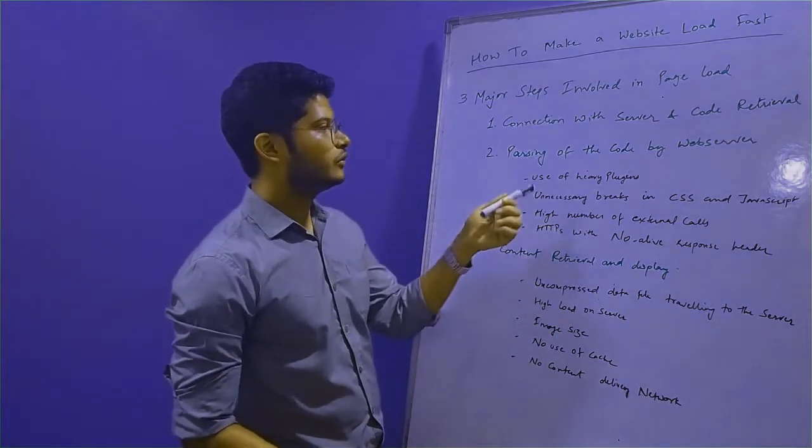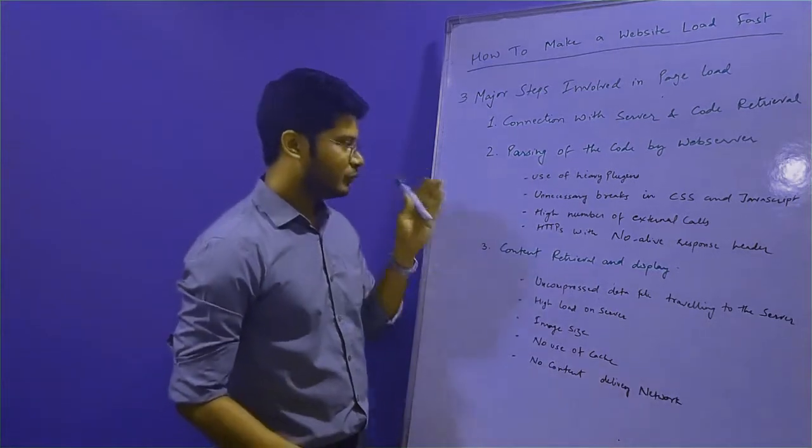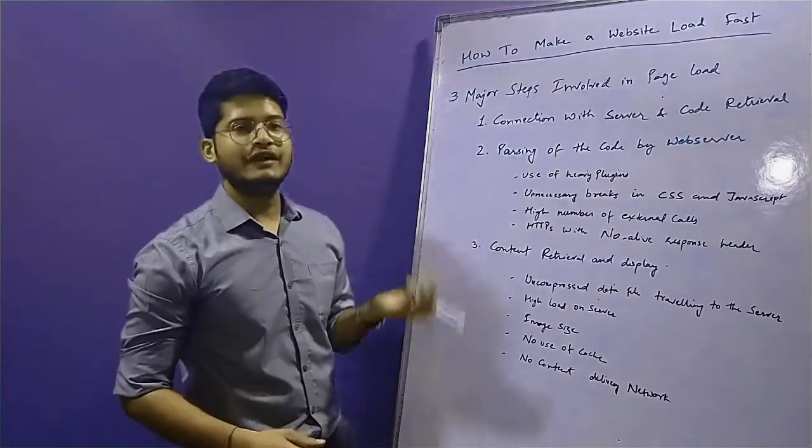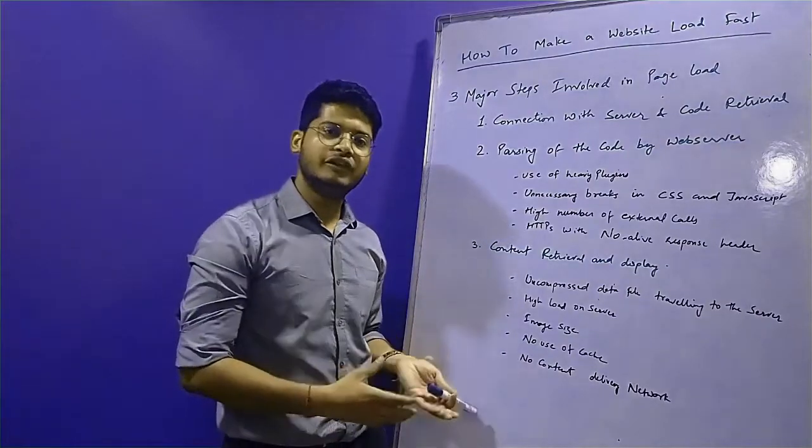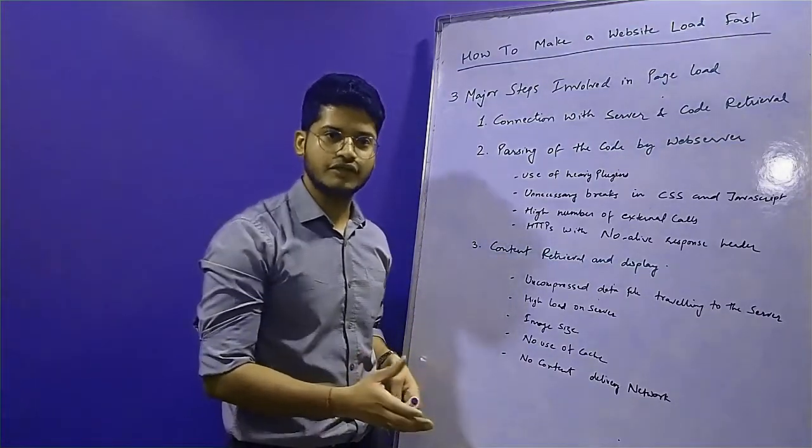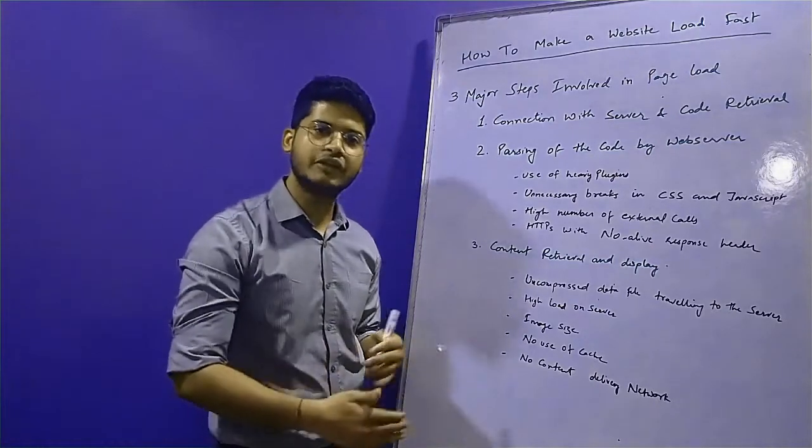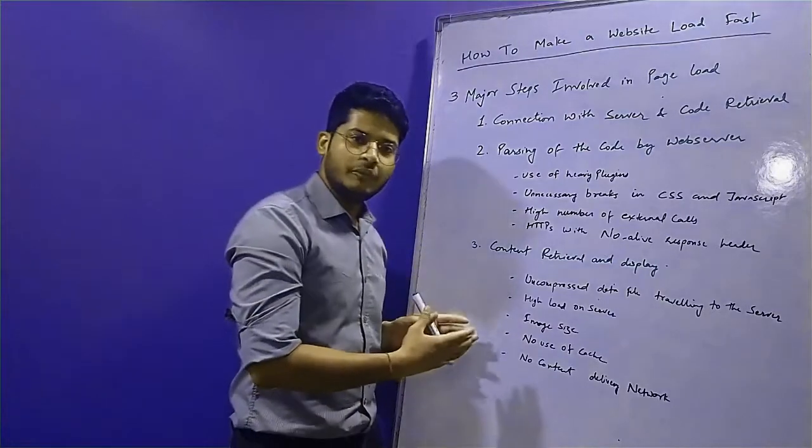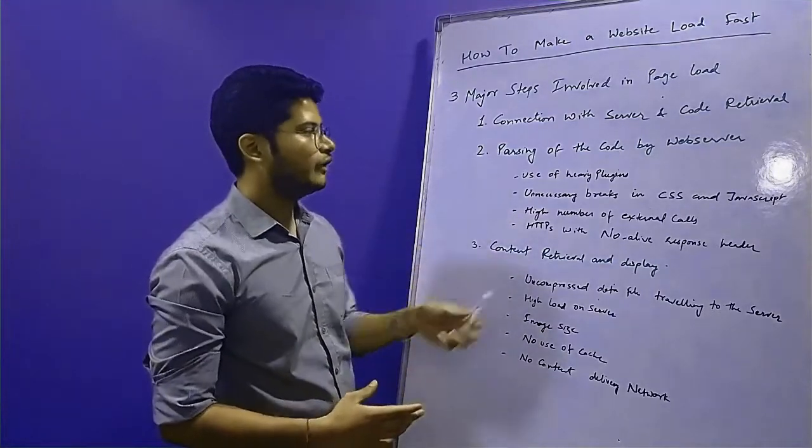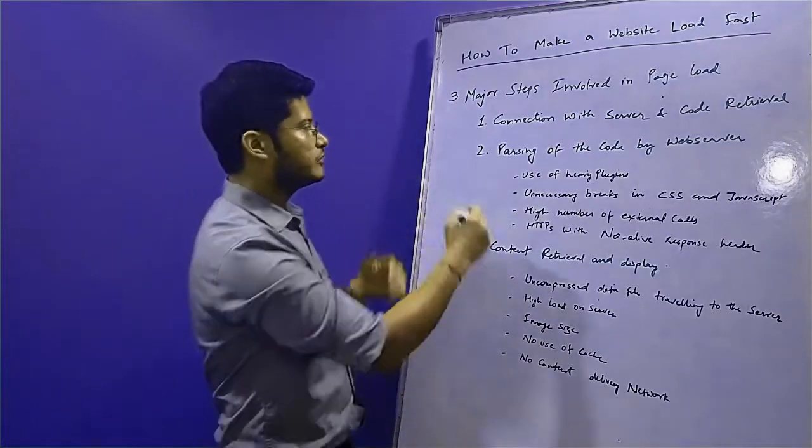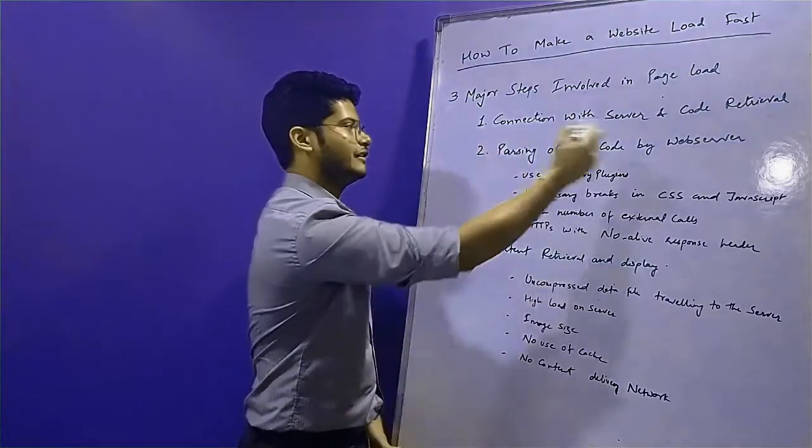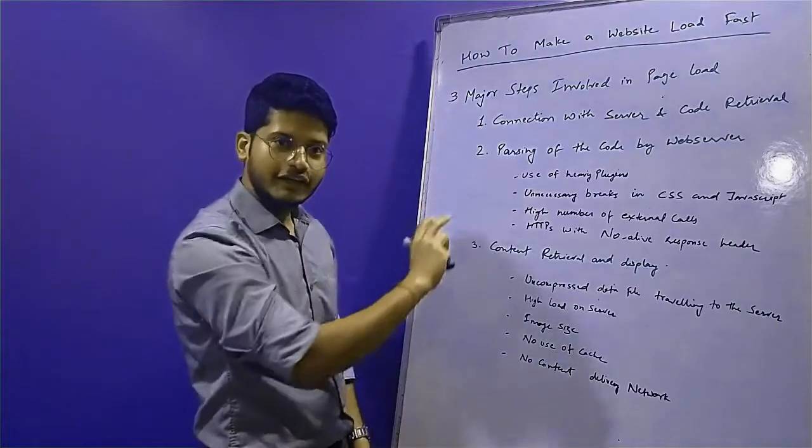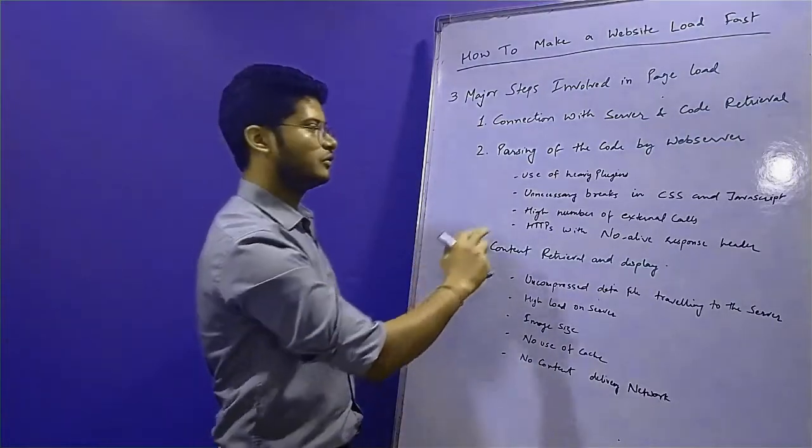In parsing of the code by web server, the things that can improve your website speed considerably are: if you have any website plugins involved in WordPress and others, plugins add to the latency of the website. Whenever your browser is decoding the web code to display it in human-understandable format, plugins add to latency. Also, if the browser reads your code line by line and there are unnecessary breaks and spaces, it adds to latency again. So there should not be unnecessary breaks in CSS and JavaScript.